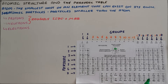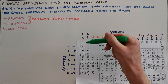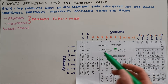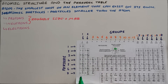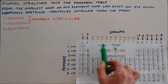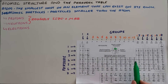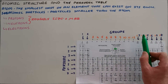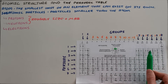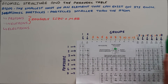We have given specific names to the rows and columns on the periodic table. We refer to the columns as groups — this column here is group one, and this column is group two. Elements in groups three to twelve are often referred to as the transition elements, and group thirteen is sometimes called group three as well, but there are essentially eighteen groups. Elements in the same column tend to have similar properties.